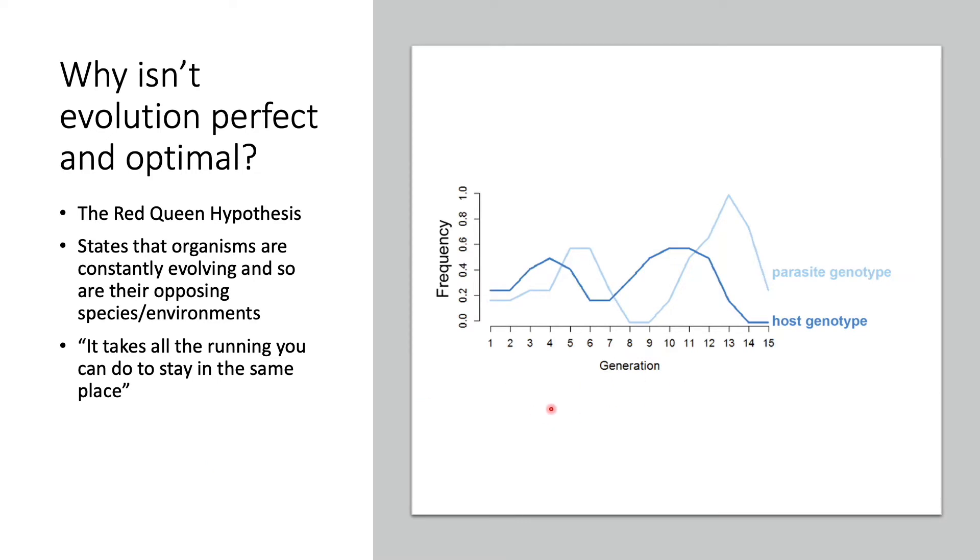We can actually look at this graph to explore this statement further. We have a light blue line representing the parasite in the environment and a dark blue line that represents the host. The x-axis represents the generation and the y-axis represents the frequency.